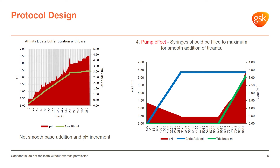We found that the dosing units on the EasyMax system use a syringe pump, and those syringes have to be filled to the maximum level in order to achieve a smooth dosing rate. On the left-hand side we had a liquid-air interface and air bubbles in the syringe, which resulted in the choppy response. Once we corrected for those issues, we were able to achieve the smooth response seen on the right-hand side.